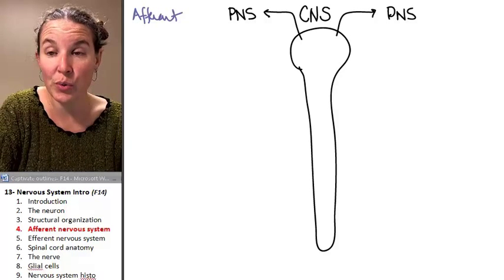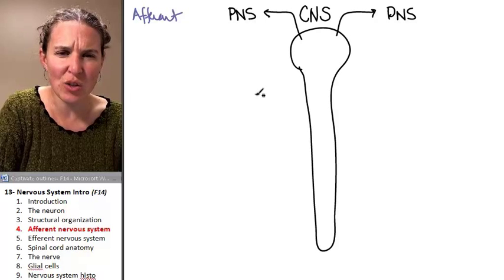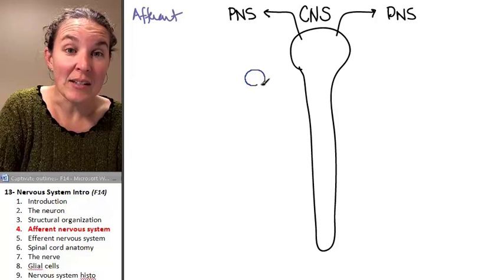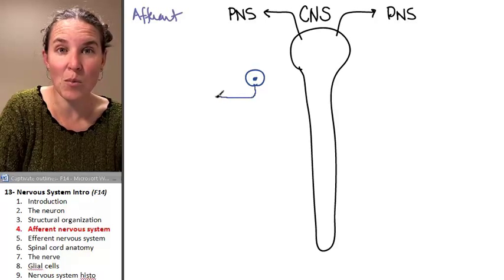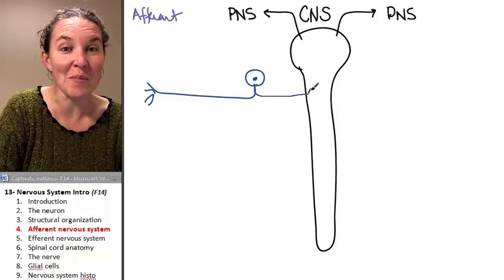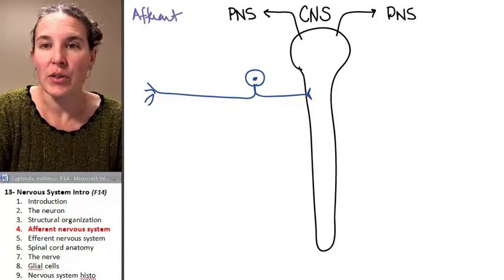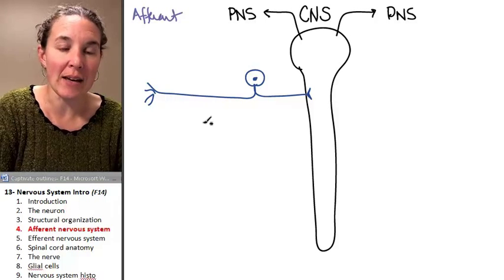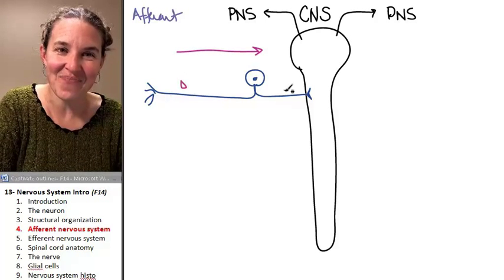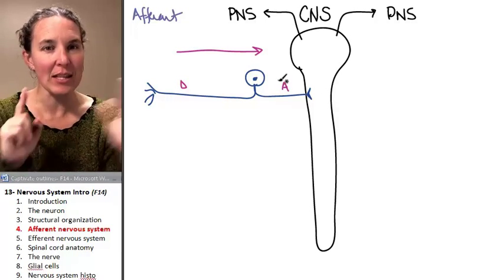There are two flavors of afferent information, which means that there are two flavors of afferent pathways, keeping in mind that the afferent pathway is nothing more than neurons. I'm telling you that this is an afferent pathway. So you tell me which direction is information traveling. Information has to be traveling this way because it's an afferent pathway, which means this is your dendrite, and this is your axon. Our cell body, I've drawn it this way on purpose. This will make sense as we go.